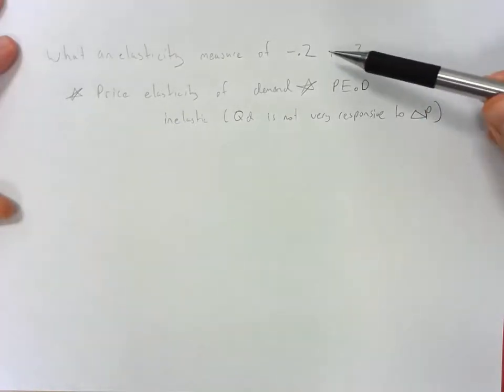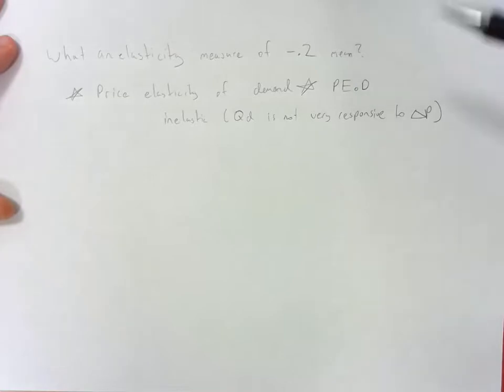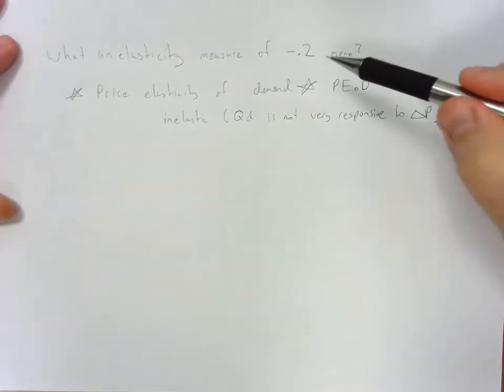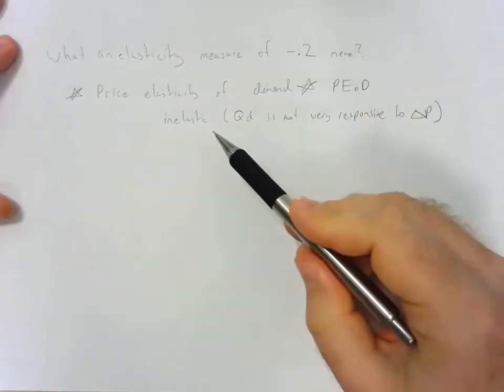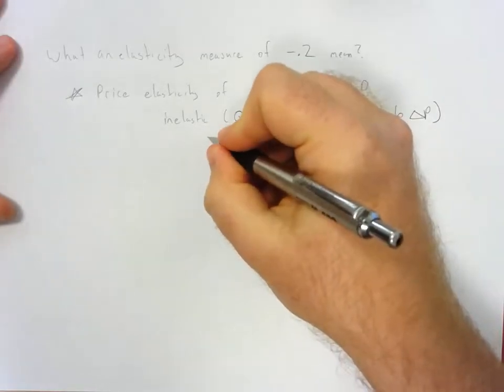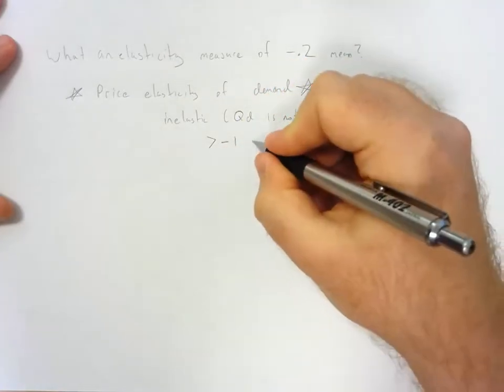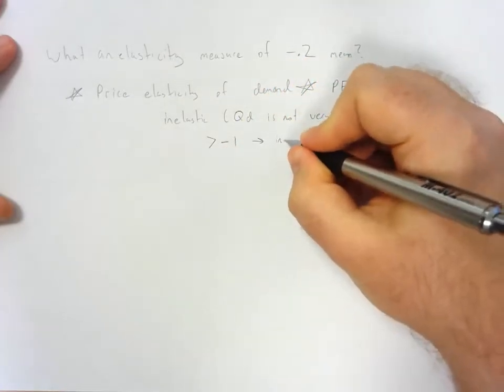Because for every percent change in price, the quantity will only go down by about negative 0.2 or 20%. So this negative 0.2 means that it is inelastic because it is greater than negative 1. It's considered inelastic.